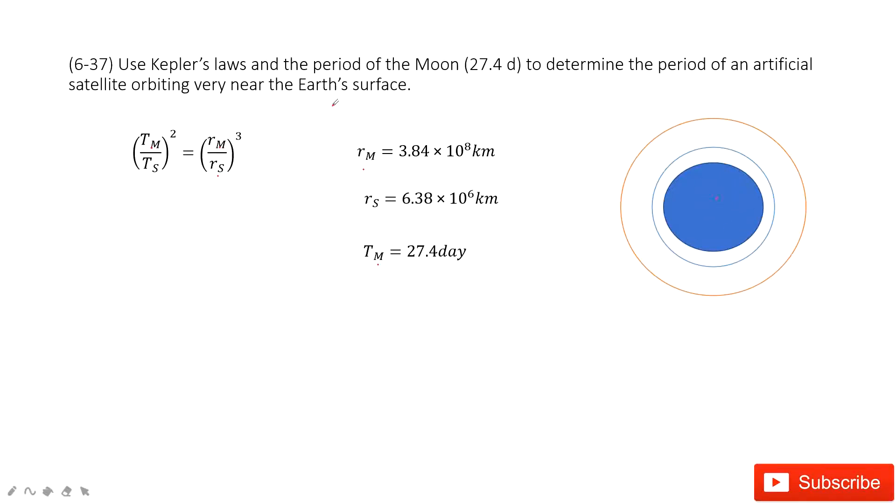How? Because it is super close to the Earth's surface, so it is just the radius of the Earth.